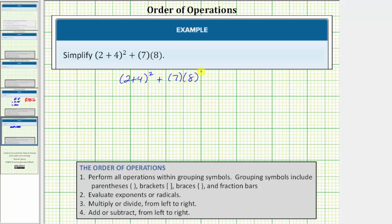We simplify the expression using the order of operations, where step one we perform all operations within grouping symbols, which include parentheses, brackets, braces, and fraction bars.